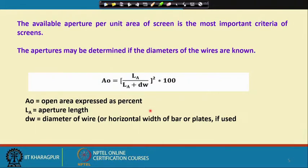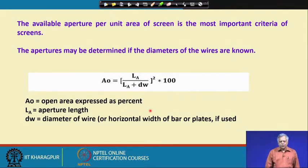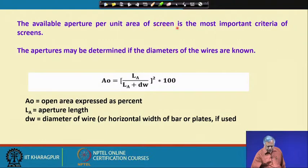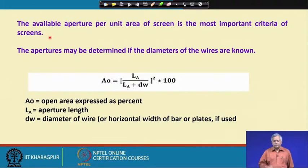A very important issue for woven wire screens is the available aperture - the available aperture per unit area of screen is the most important criteria of screens, because your screening efficiency will largely depend on how much aperture area you have provided per unit area.